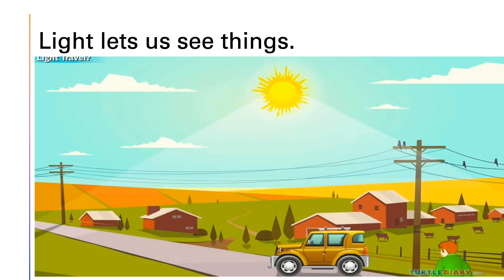We can see houses, green grasses, trees, electric wires, and clouds. Can you imagine if there were no light? It will be very, very dark. So light lets us see things around us, and we can appreciate how beautiful God's creation is.